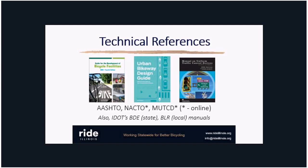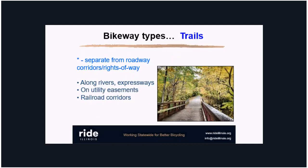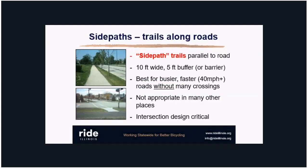We'll go through a whole range of bikeway types, starting with off-road trails on their own rights-of-way. This is what many people think of when they think of bikeways — specialized corridors along rivers, expressways, and so on — and these often form the backbone of your bikeway network. Another kind of trail is within a roadway corridor, called side paths. Side paths are basically widened sidewalks — the standard is ten feet wide, with eight feet as a variance — and you need a grass buffer or retaining wall between the road and the path.